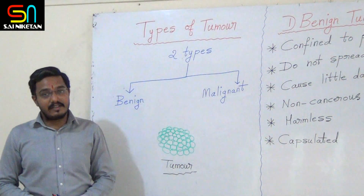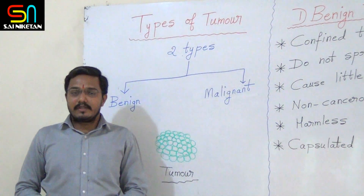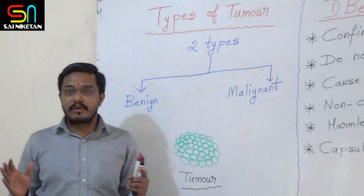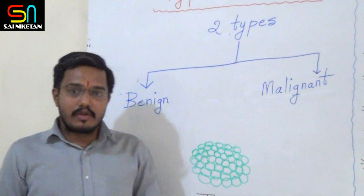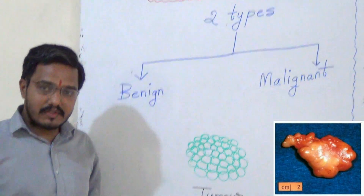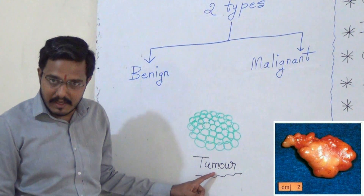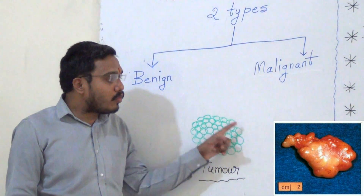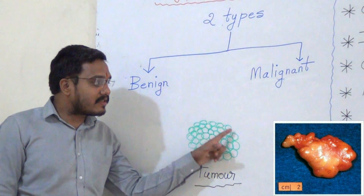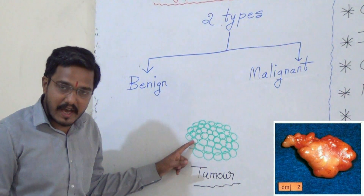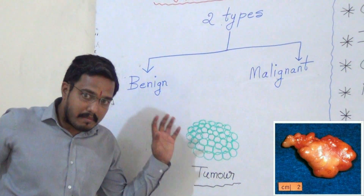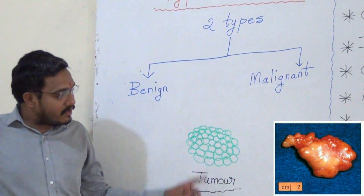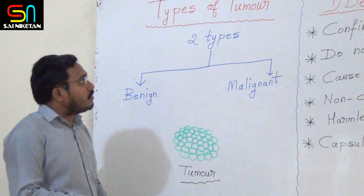We are discussing about cancer. This is the third video about cancer. In this video we talk about types of tumours. Students, we have already discussed about the definition of tumour. Tumour is a group of cells or masses of cells formed due to uncontrolled cell division.